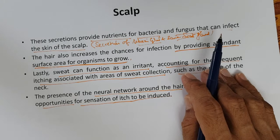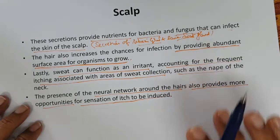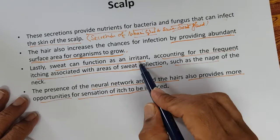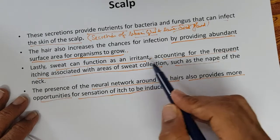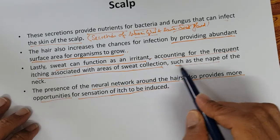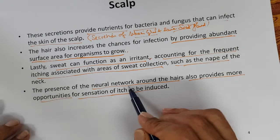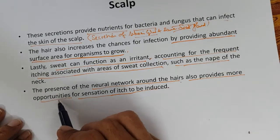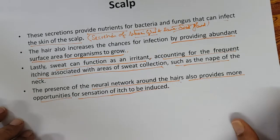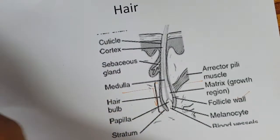The sebum and fat are there, the sweat and moisture are there, and good surface area is there. Sweat can also function as an irritant, accounting for frequent itching associated with areas of sweat collection such as the nape of the neck. The neural network around the hairs also provides more opportunities for the sensation of itching.